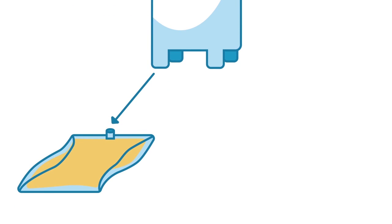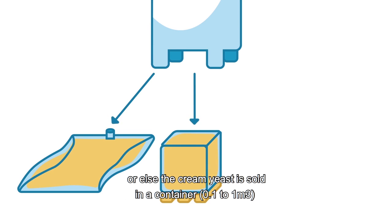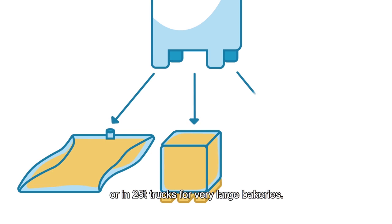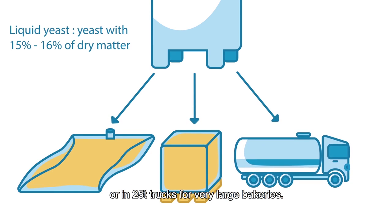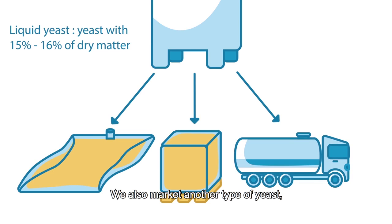either in Castalia, which is a sort of refrigerated bag, or else the cream yeast is sold in a container, 0.1 to 1 cubic meter, or in 25-ton trucks for very large bakeries. We also market another type of yeast,